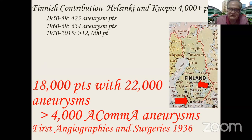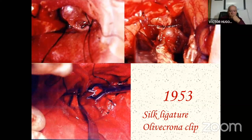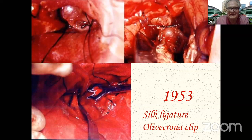There are more than 4,000 ACoA aneurysms in this combined database. Interestingly, the first angiographies were done in Finland already before the Second World War, and the first aneurysms were operated on that year. These were primitive methods of treating aneurysms. After the Second World War, aneurysm surgery began to become more common. Aneurysms were ligated with silk or linen threads and regular clips were put on the base of the aneurysms.